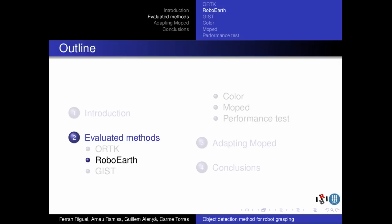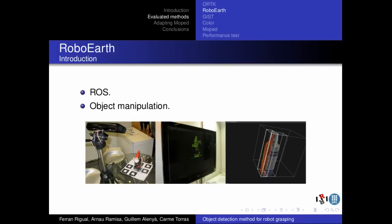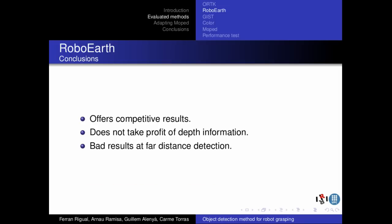The second evaluated method is ROBOEARTH, which can be downloaded from the repositories of ROS — Robot Operating System. In ROBOEARTH, a 3D model of the object is created using the depth information provided by the Kinect camera. ROBOEARTH offers competitive results when dealing with distances lower than 2 meters. Even when it uses 3D models to train the objects, ROBOEARTH does not use the 3D information in the detection phase.